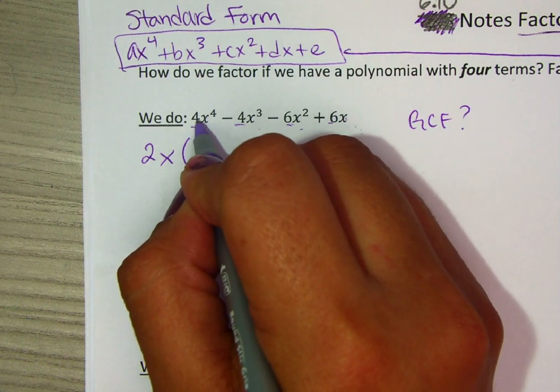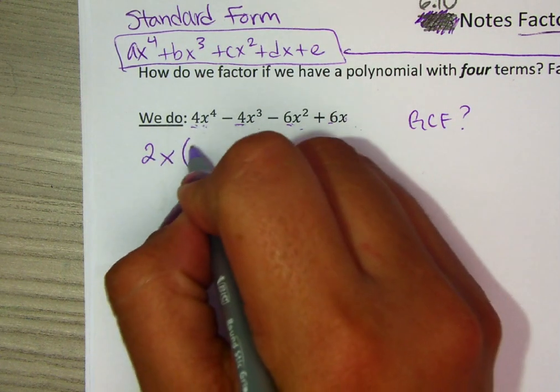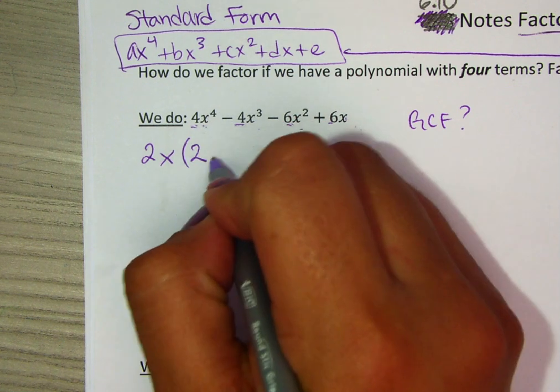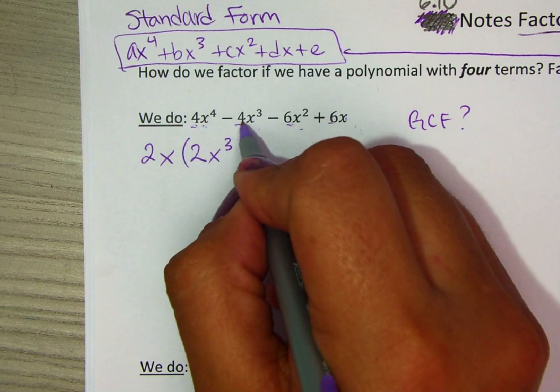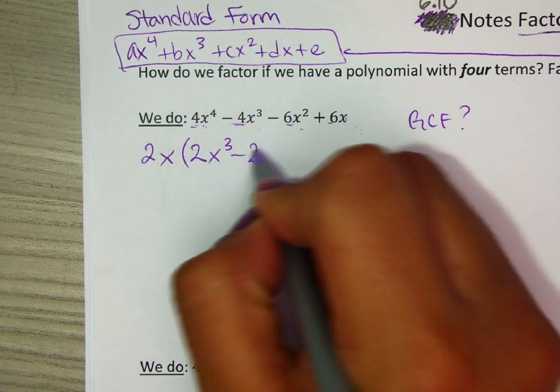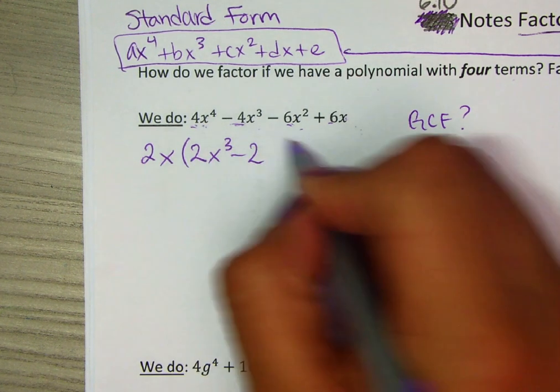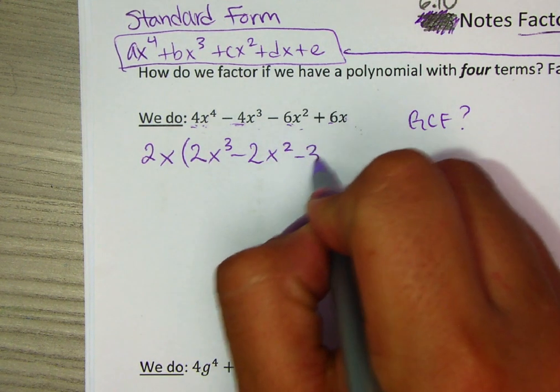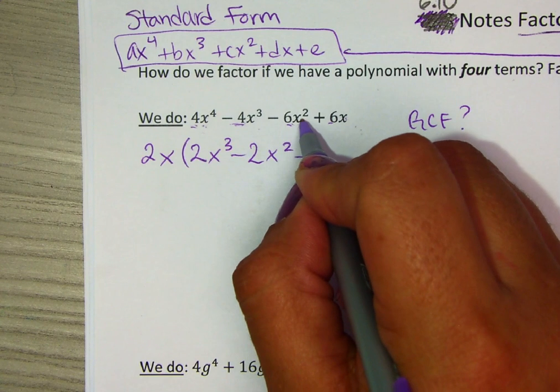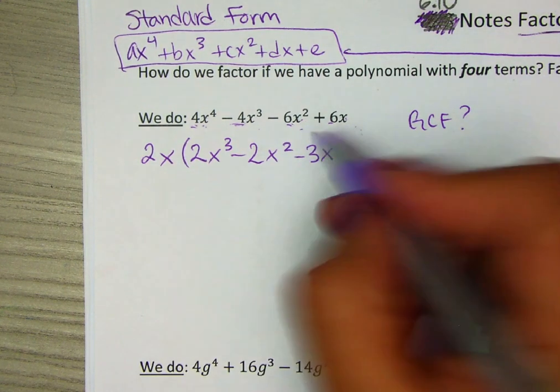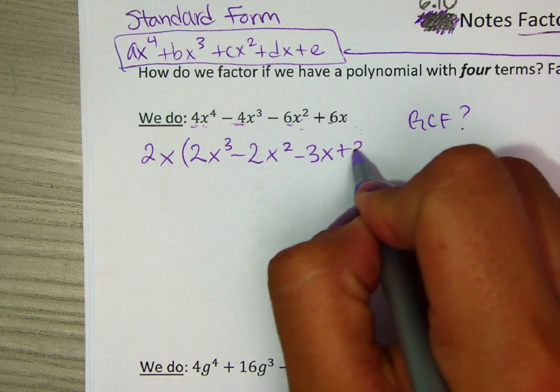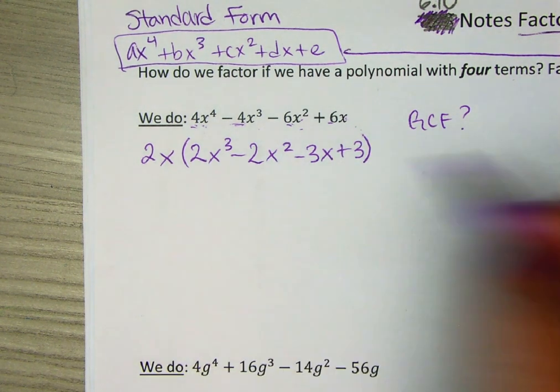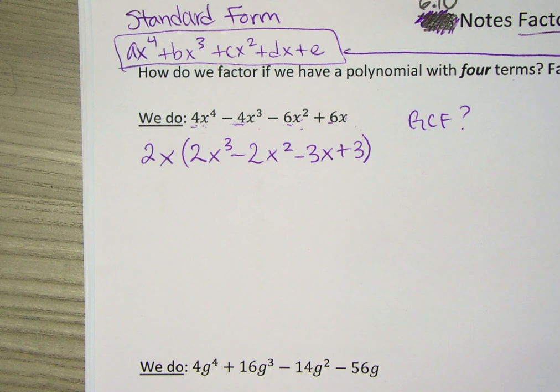We're going to factor out that 2x. You're technically dividing each term by 2x. So 4 divided by 2 is 2, x to the 4th factoring out an x leaves x cubed. Then divide this number by 2, so it's negative 2, and factor out an x, so that's x squared. Divide by 2, that's negative 3, factor out the x, so that's x by itself. And 6 divided by 2 is positive 3. This is the first step - factor out the GCF if possible.